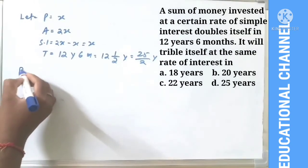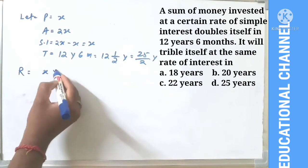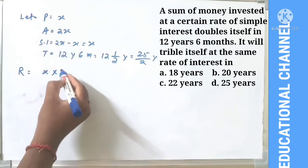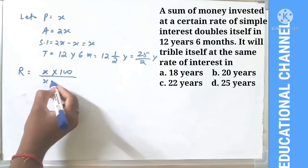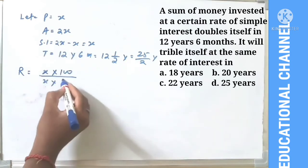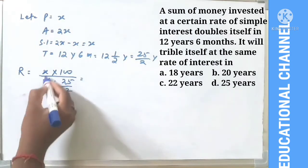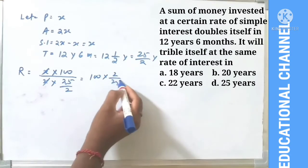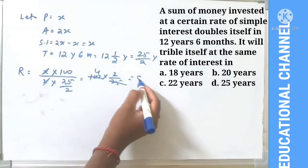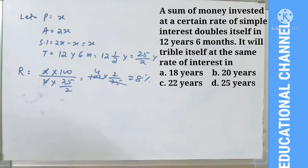Rate of interest R = (SI × 100)/(P × T) = (x × 100)/(x × 25/2). Simplifying: x cancels, giving (100 × 2)/25 = 8%.